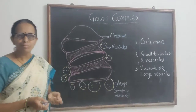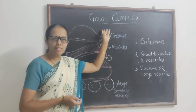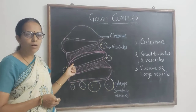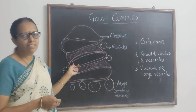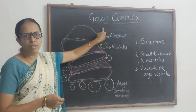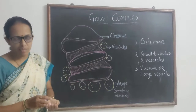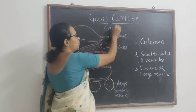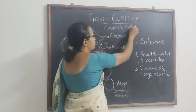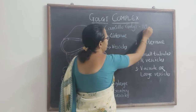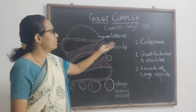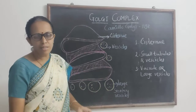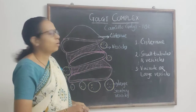We are going to discuss the next important cell organelle called the Golgi complex, which is present in all types of cells — in plant cells as well as in animal cells. It was first discovered by the scientist Camilo Golgi in 1898, and hence it is called the Golgi complex in honor of this scientist.